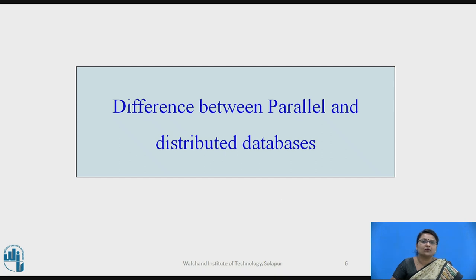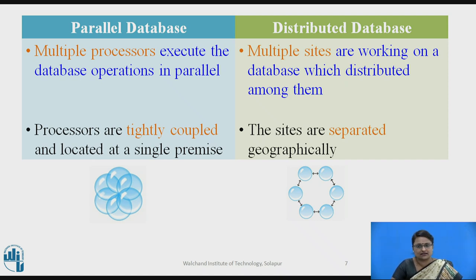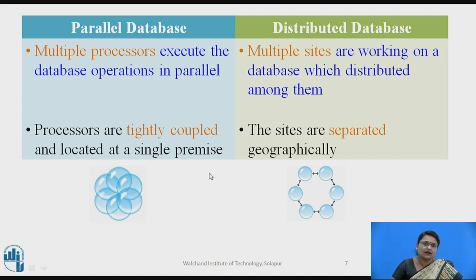What is the difference between parallel and distributed databases? In a parallel database, multiple processors execute database operations in parallel. In a distributed database, multiple sites work on a database across a network. In parallel databases the network is typically LAN, while in distributed databases it may be WAN. In a parallel database, processors are tightly coupled and located at a single premise, with different nodes interconnected within that single location.